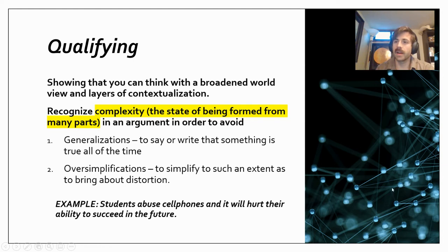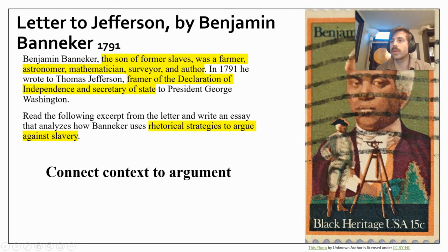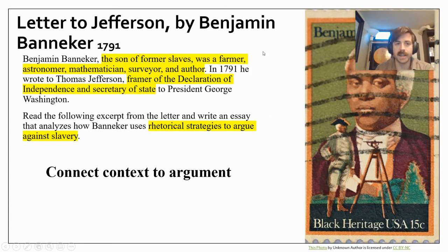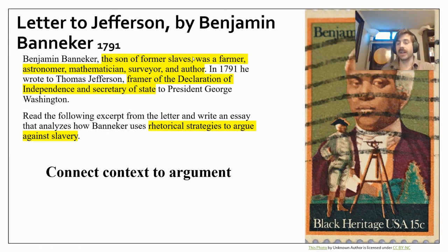Let's take a look at an argument we've seen before and try to recognize some of the complexity in just the prompt itself. This is the letter from Benjamin Banneker to Thomas Jefferson written in 1791 — an AP-style prompt for a rhetorical analysis essay. Notice all the contextualization included in the prompt: Benjamin Banneker, the son of former slaves, was a farmer, astronomer, mathematician, surveyor, and author. If he's arguing against slavery, the fact that he was the son of former slaves is relevant and could add another level of complexity.